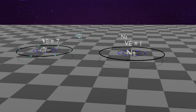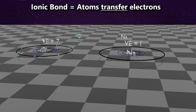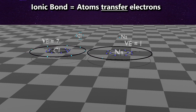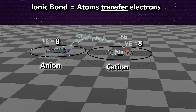Our first type of bond is the ionic bond, which occurs when atoms transfer electrons. Here's an example: chlorine has a valence electron number of 7 and sodium has a valence electron number of 1. Chlorine is going to steal the electron from sodium to fill its valence shell. This makes chlorine negative and sodium positive — chlorine is an anion and sodium is a cation — and both have a full valence shell.